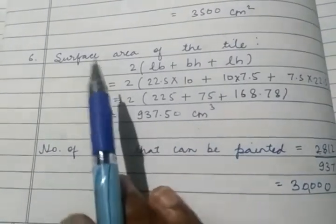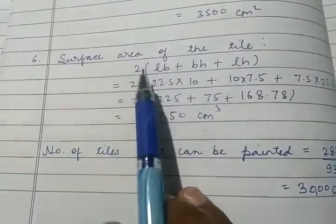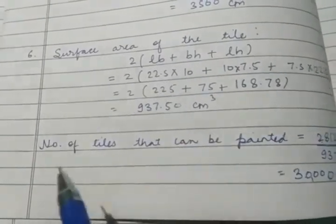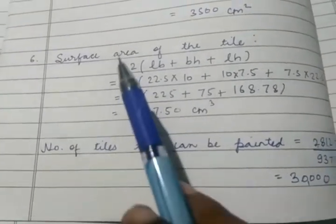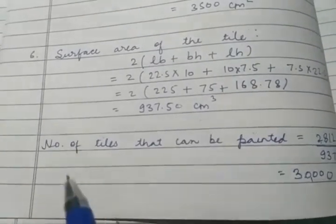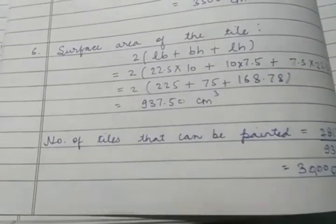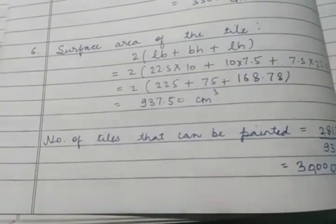Because tiles are in cuboid shape, surface area will be 2(lb + bh + lh). The values are given to you, that you will put and simplify the values and you will get the surface area value. You will get the next thing you have to start with is how many tiles we can paint, which is the number of tiles.